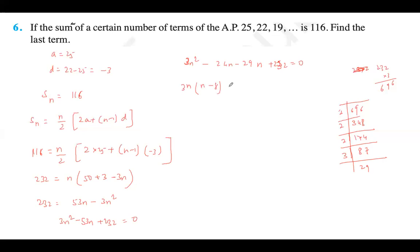3n minus 29 into n minus 8 is 0. N's value cannot be a fraction, so 29 by 3 won't work.